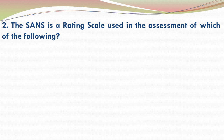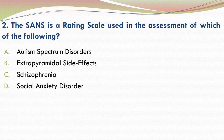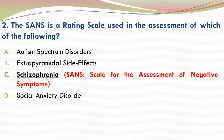Question 2: SANS is a rating scale used in the assessment of which of the following? Please go through the options and make your selection. The correct answer is C — schizophrenia. SANS is a rating scale used in the assessment of negative symptoms of schizophrenia.